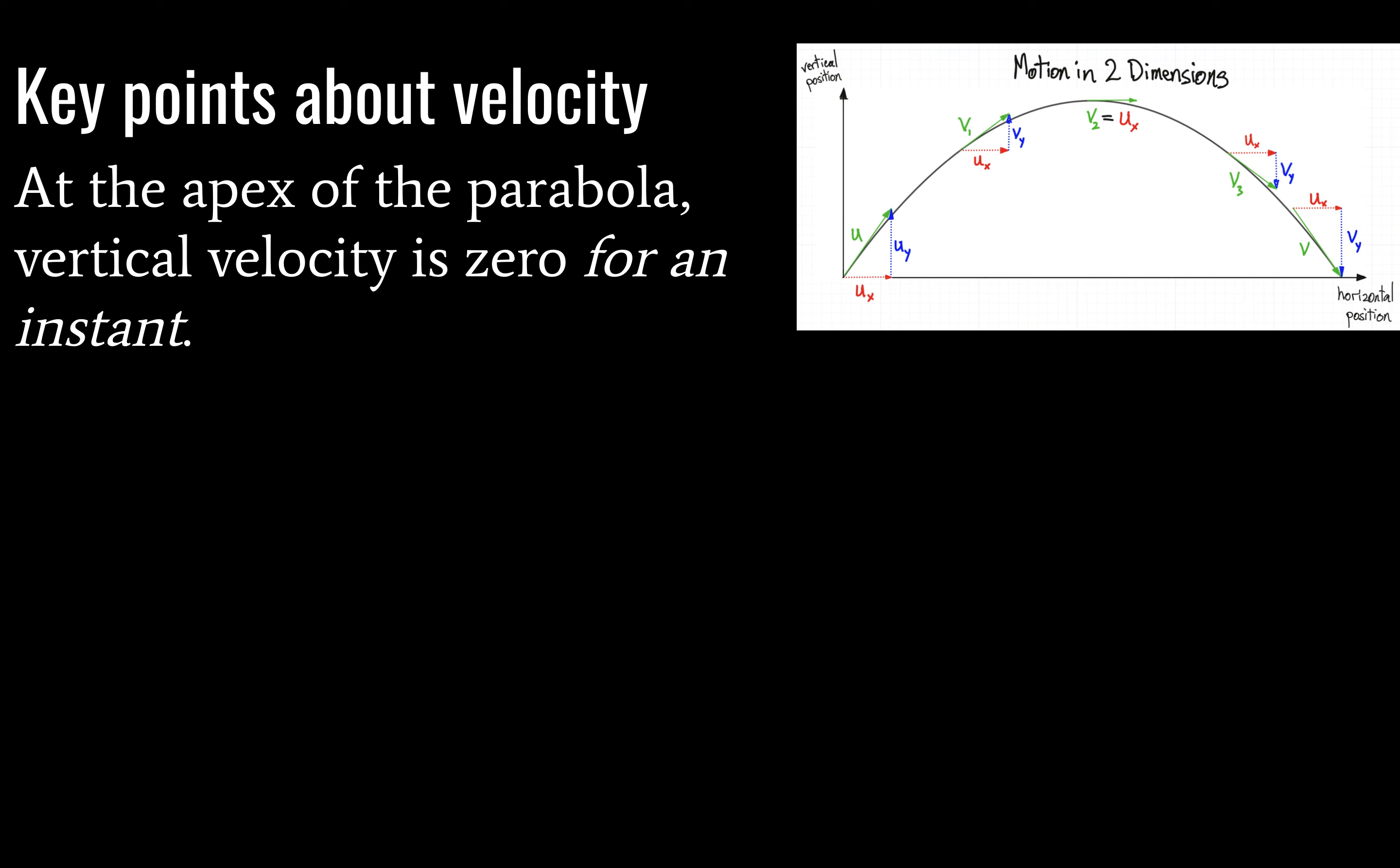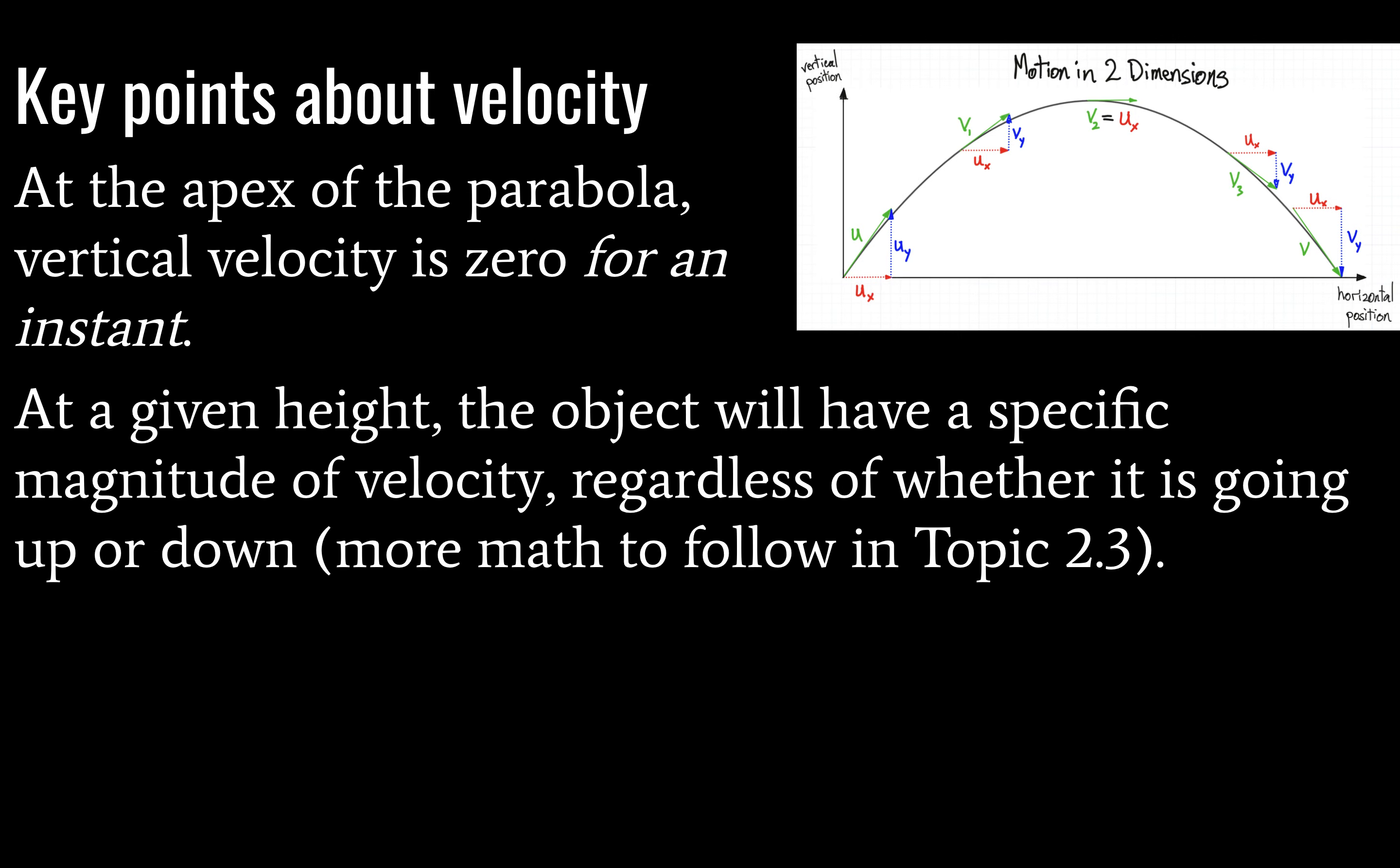So some key points about velocity are as follows. First, at the apex of the parabola, vertical velocity, the vertical component, is going to be equal to zero just for an instant, for a tiny, tiny, tiny slice of time. And if you're looking for kind of a TOK question here, one of the big questions in physics is, is time quantized? In other words, is there a smallest possible amount of time? It's an interesting question. It's a little off topic, so we won't get into it, but these are the kinds of questions that you should ask.